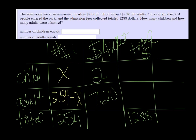And then to get this total amount, well, if there were X children there and they each paid $2, then the amount collected for the children would be 2X. And likewise with the adults, we would have 7.20 times 254 minus X.